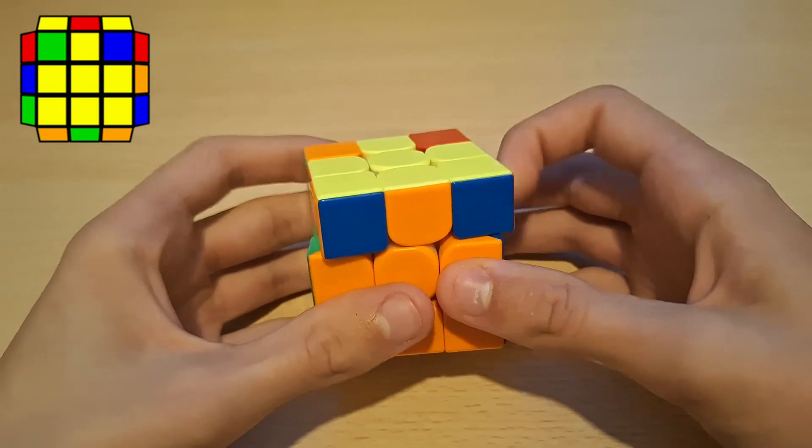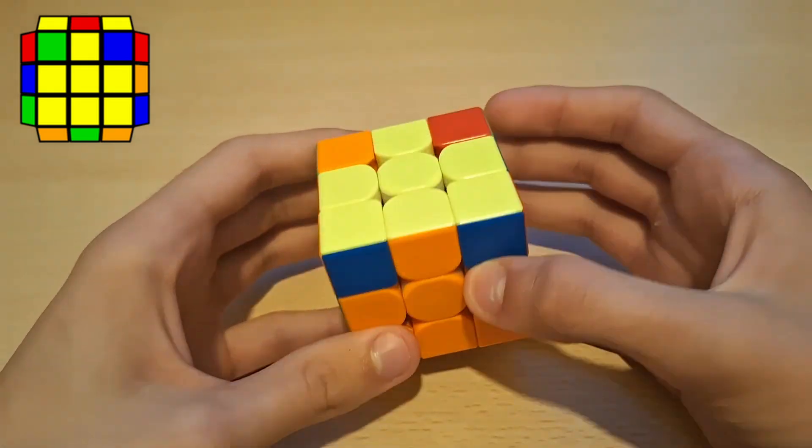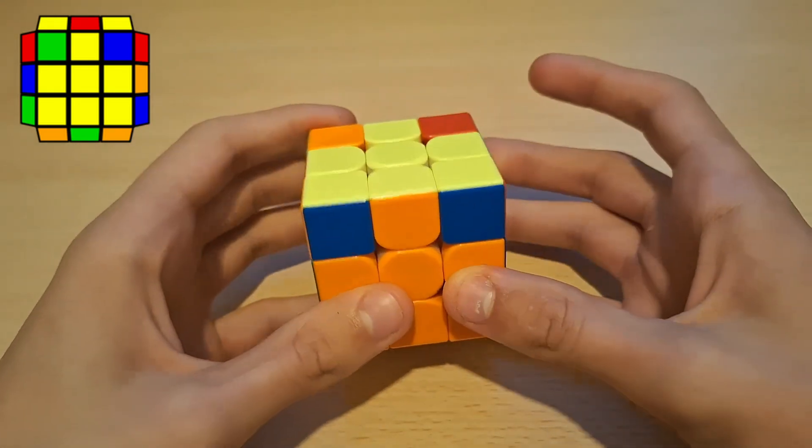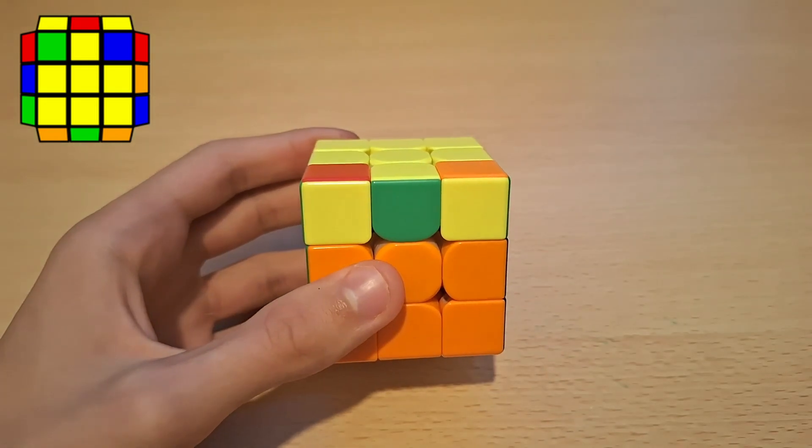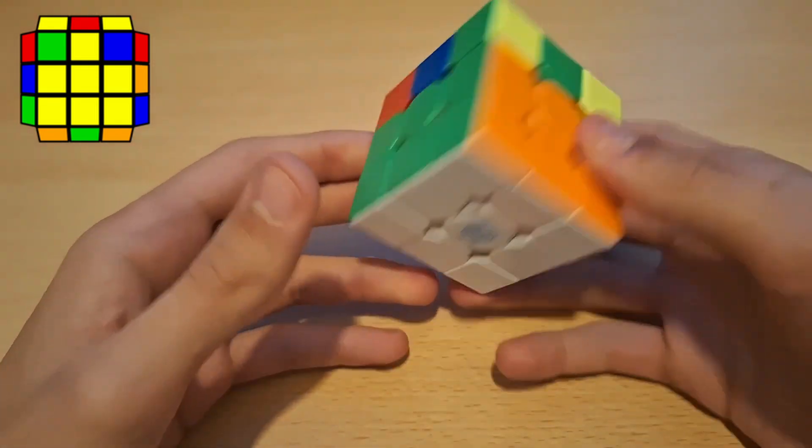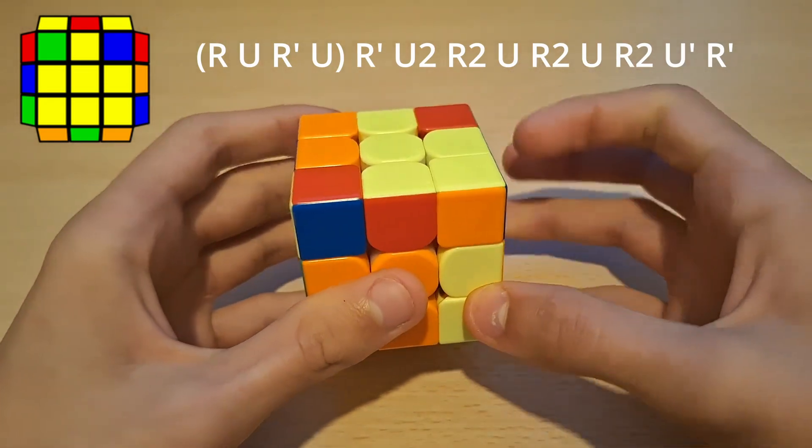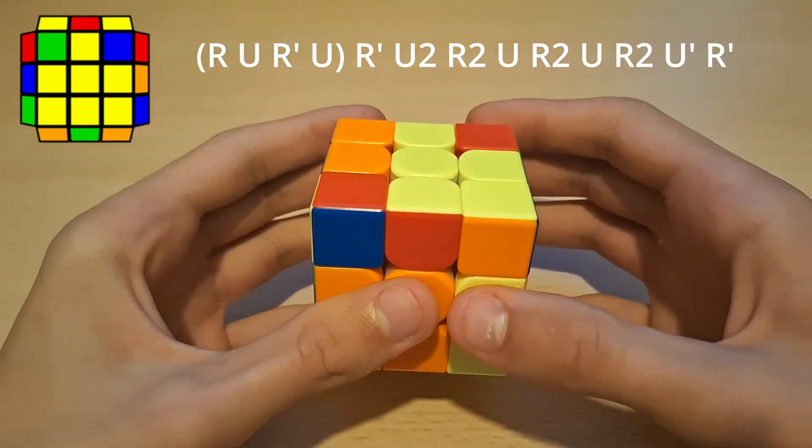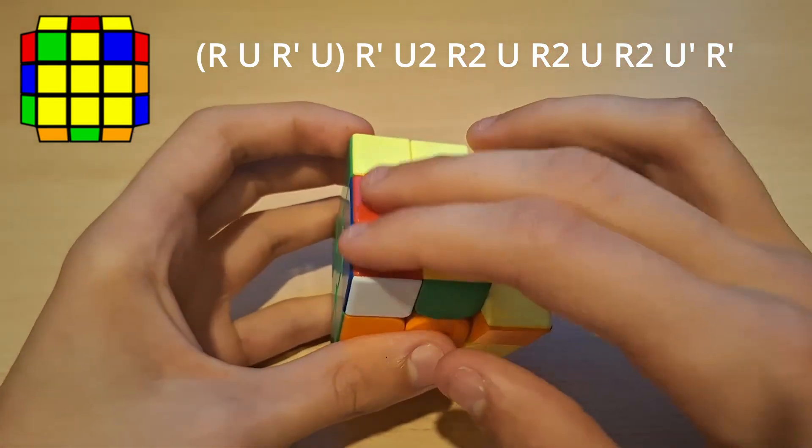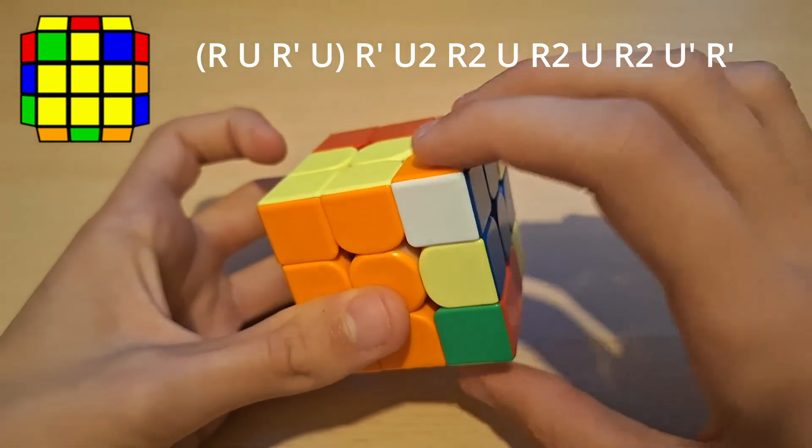Alright now for this ZBLL, so this is also a U-perm but this time with a UB-perm as you can see. This time we're gonna do from the front. And this is pretty much the same algorithm from the front, so you just do a right sune but instead of ending in R'U2R you end in R'U2R' and then insert this pair and this pair.